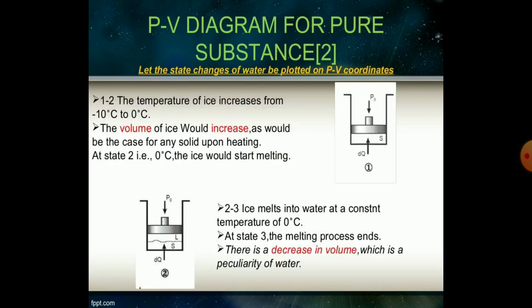The temperature of ice increases from minus 10 degrees to zero degrees and the volume of ice would increase, as would be the case for any solid heating. At stage two, at zero degrees Celsius, the ice will start melting and will begin to convert into the form of water, that is liquid form.